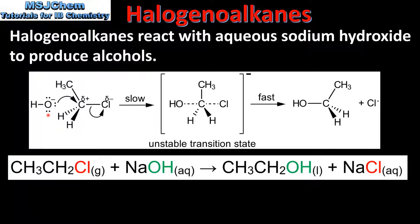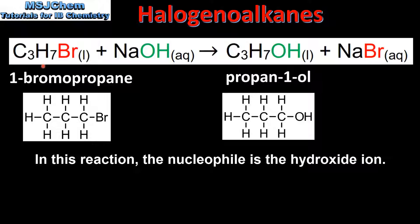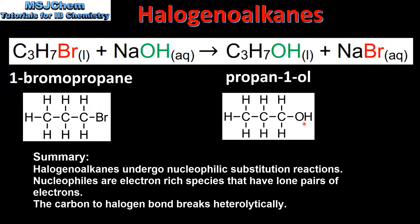The hydroxide ion comes from the aqueous sodium hydroxide. Here we have the reaction of 1-bromopropane with aqueous sodium hydroxide to produce propan-1-ol and sodium bromide. Here we have the full structural formula of 1-bromopropane. As we can see, the bromine atom is replaced by a hydroxyl group.